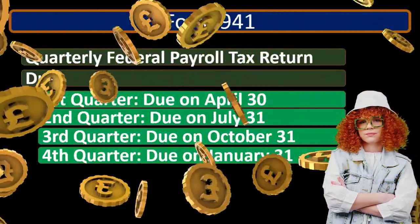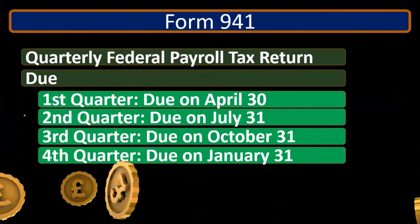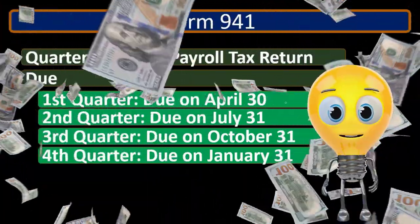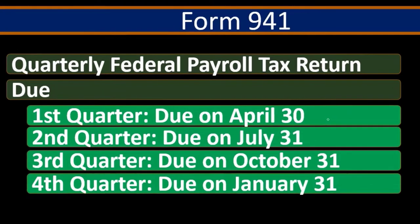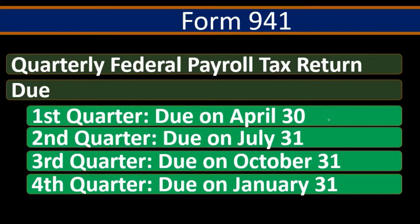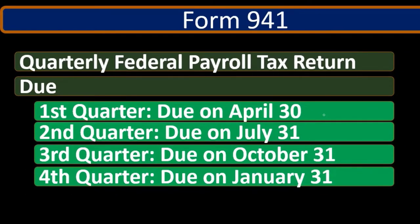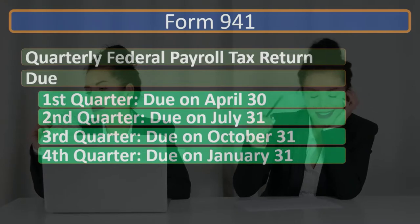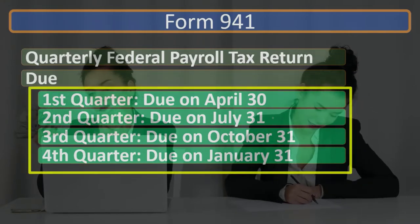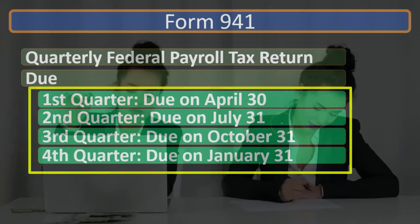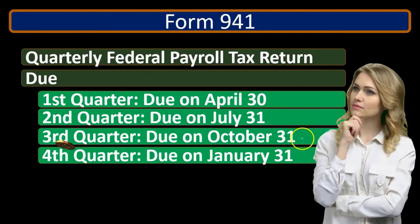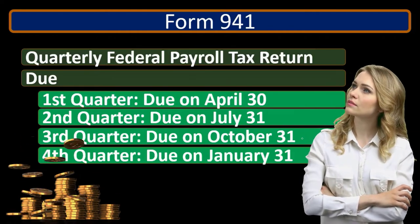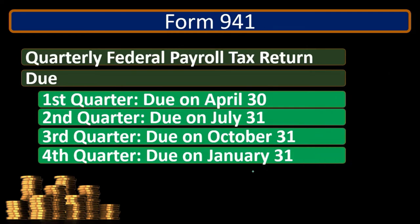The question is when do we have to report the 941s? The first quarter — January, February, March — must be turned in by April 30th. The second quarter — April, May, June — is due by July 31st. The third quarter — July, August, September — is due by the end of October. And the fourth quarter — October, November, December — is due by January 31st of the following year.